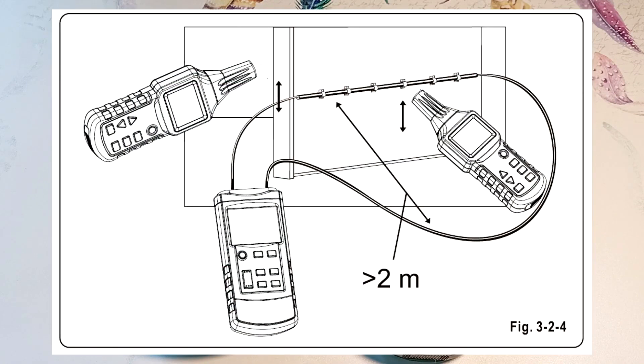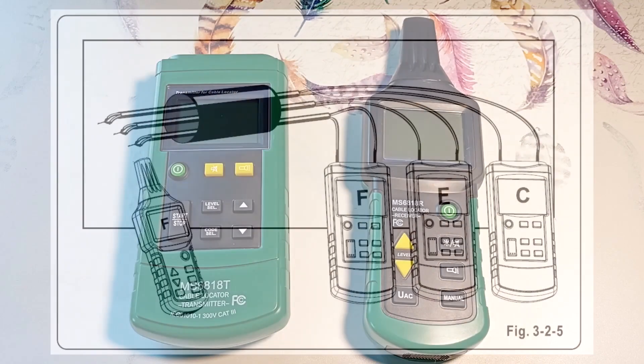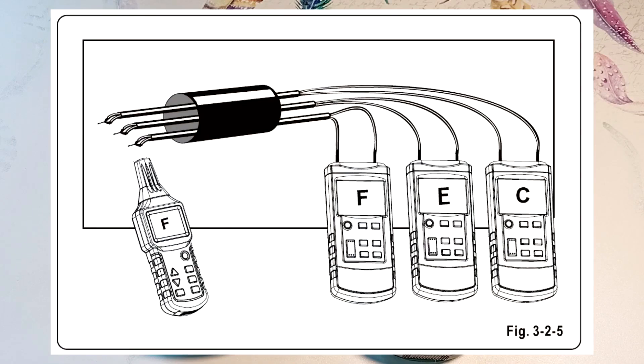This figure shows the detection of deep wires. The circuit must be de-energized. The generator is connected to the two ends of the wire located in the wall. It should be taken into account that the distance of the loop wire to the wall should be more than 2 meters. It also shows the detection of several circuits at the same time, or the distribution of a three phase circuit.